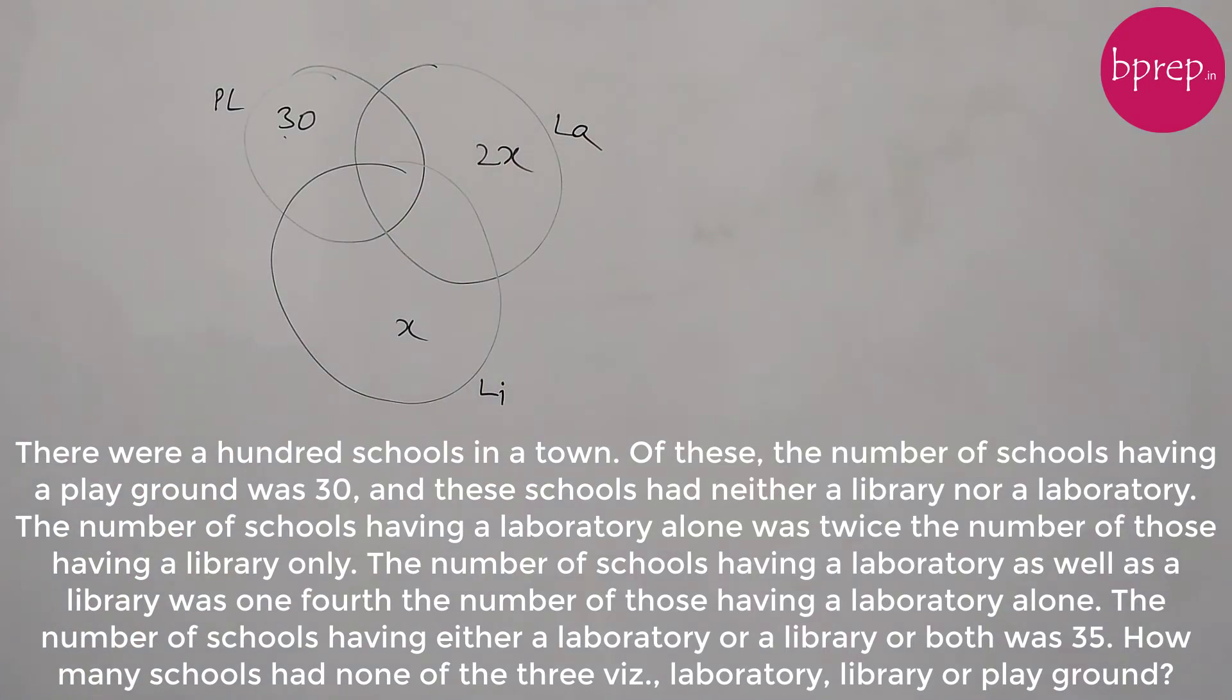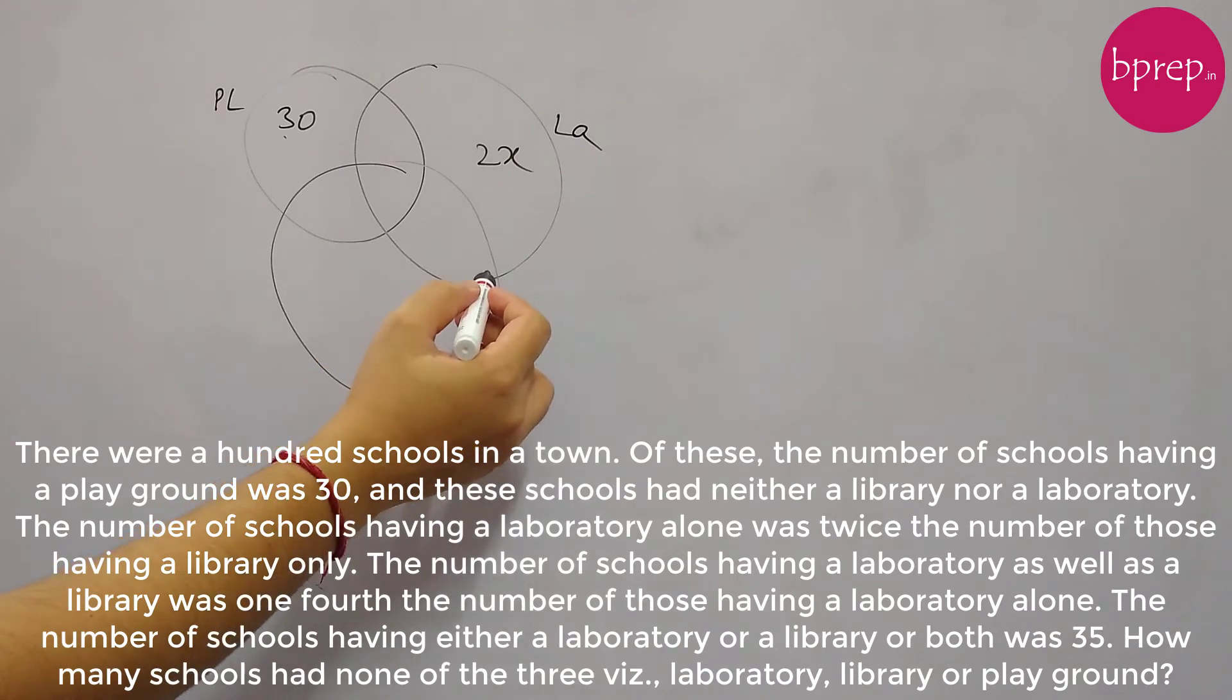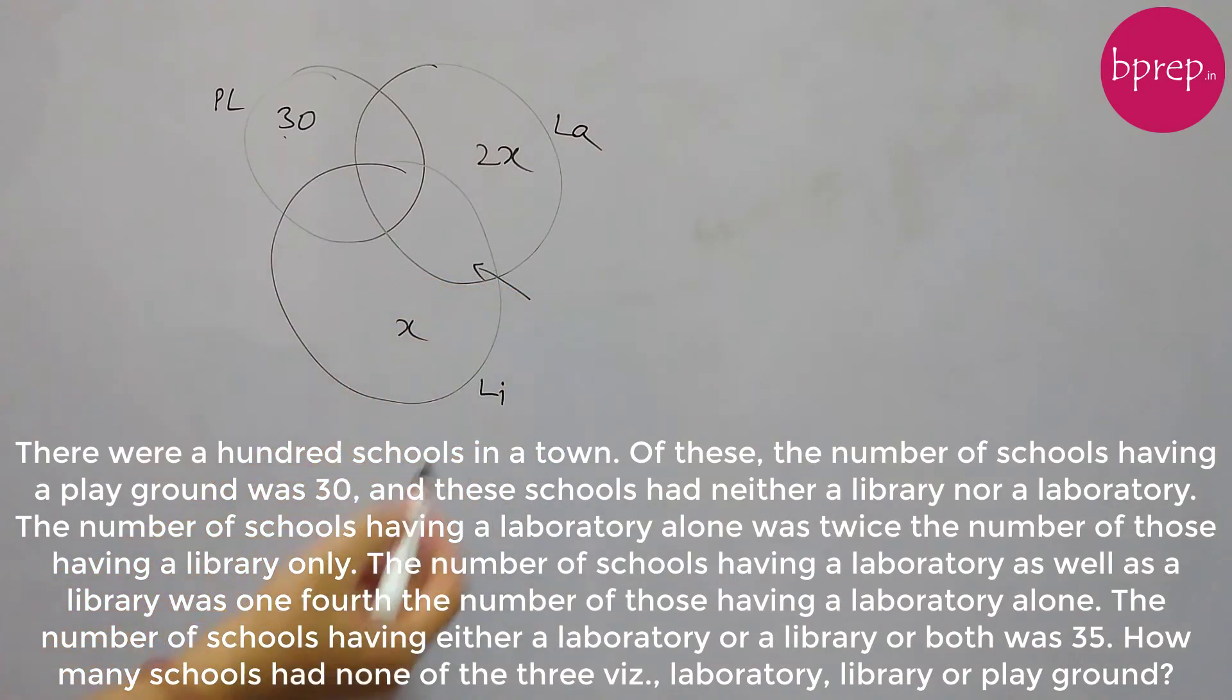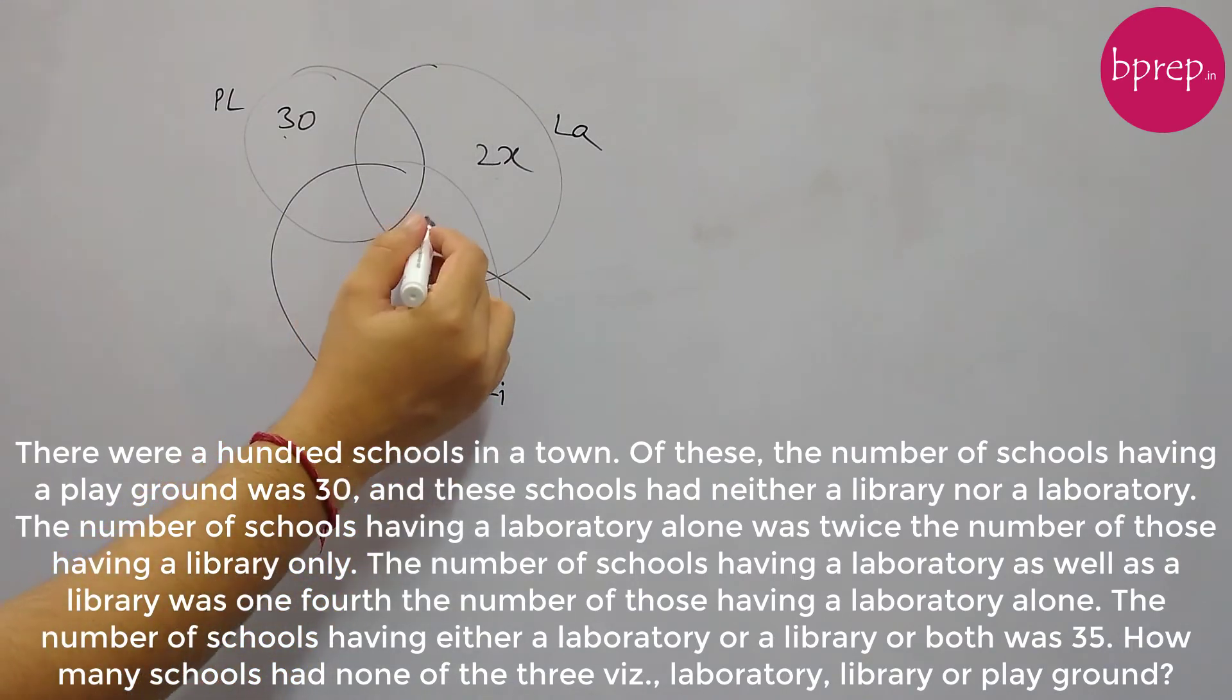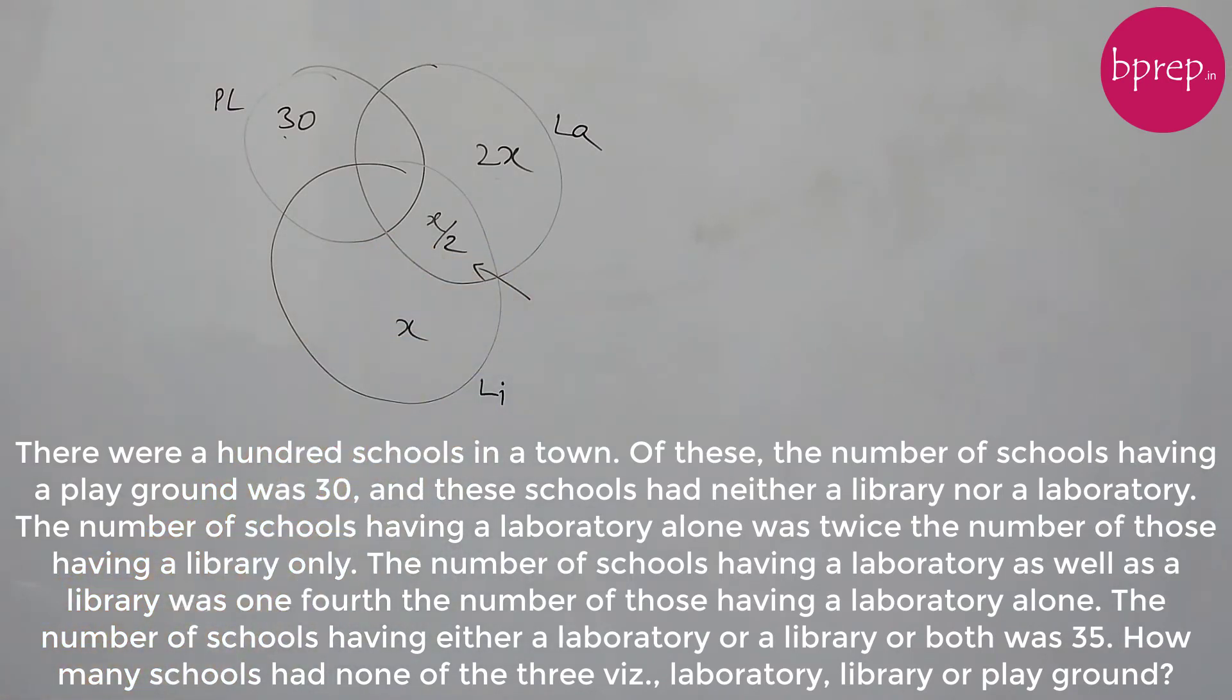And number of schools having a library as well as a library was one-fourth the number of those having a laboratory alone. So now this number, this section, where a school is having laboratory and library both is one-fourth of this. So 2x by 4, or we can write x by 2.